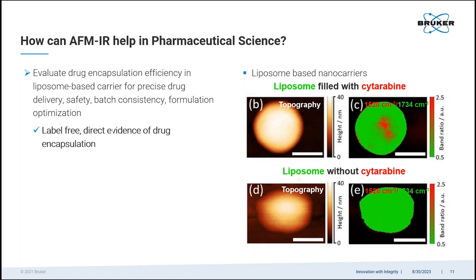In this case, AFM-IR offers the ability to characterize single particle-level composition without the need for any fluorescent tags, which would otherwise alter the physical-chemical properties of the nanoparticles. With AFM-IR chemical imaging, one can discriminate drug-loaded versus empty liposomes, as well as visualize the drug's nanoscale distribution in individual liposomes, allowing direct confirmation of drug encapsulation via label-free methods.